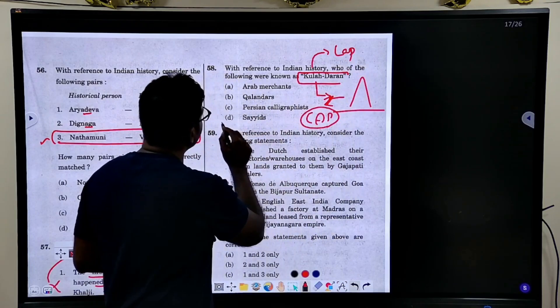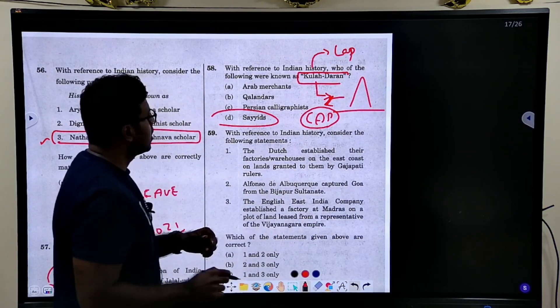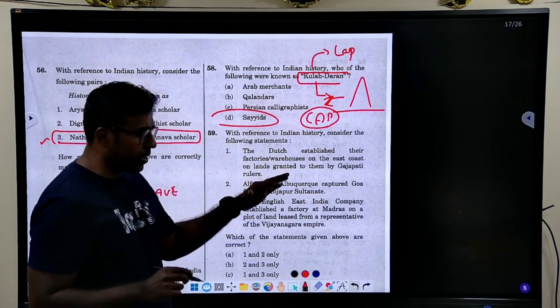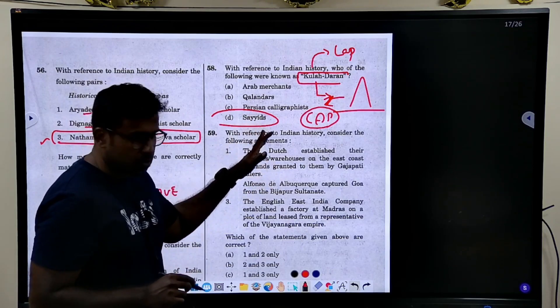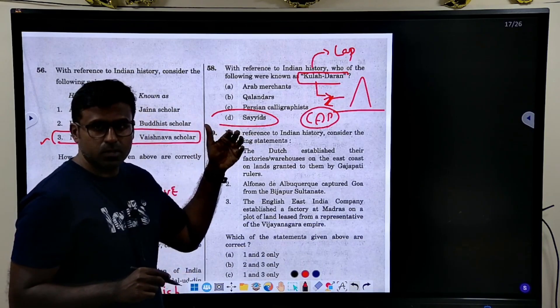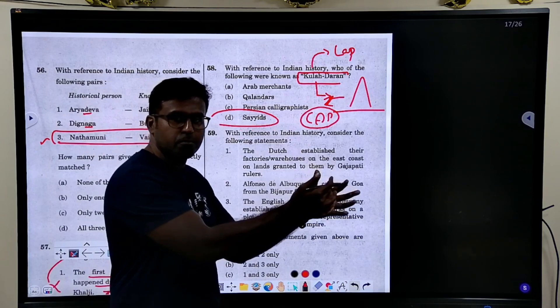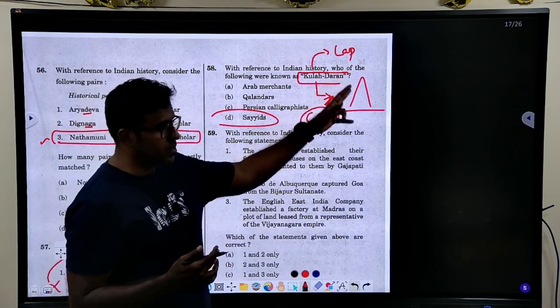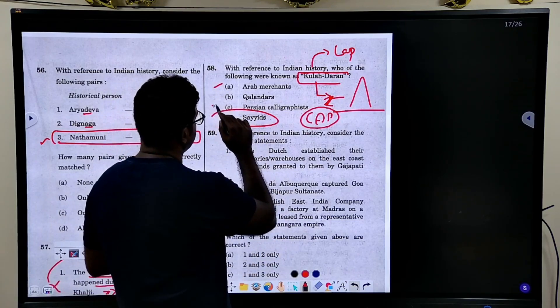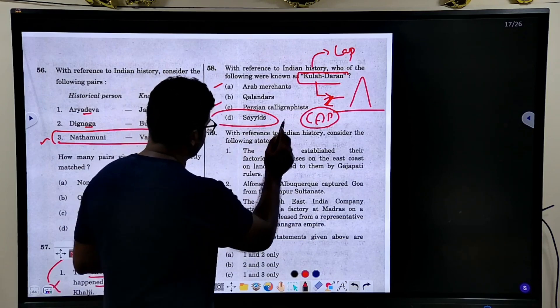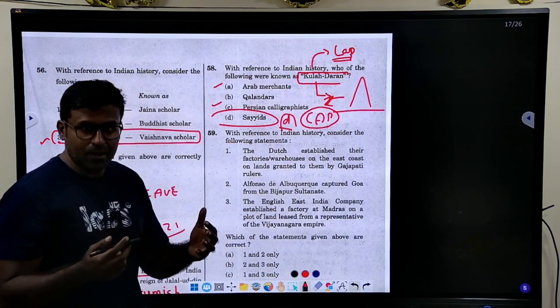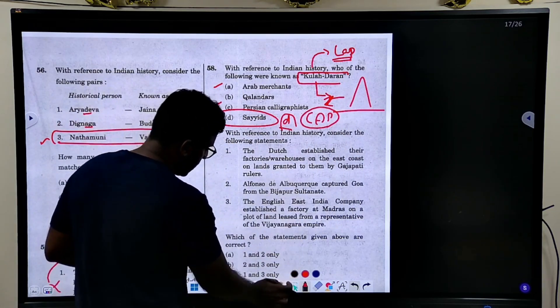In this, who was wearing cap means Saiths or people - Persian calligraphers, Kalandars, Arab merchants. How I too was not sure of this Saith or something like that because, you know, in a sense, people who came from Persia, they actually wore this cap. This was the thing I knew. Arab merchants, Persian calligraphists maybe, but answer is D. If you can make this up, Kuladharan means person who is wearing cap, all of them. So this is the answer for this.